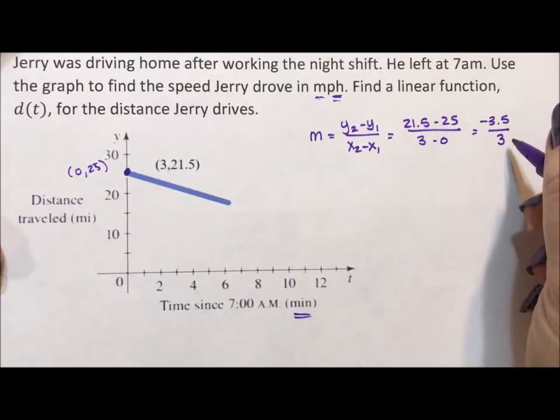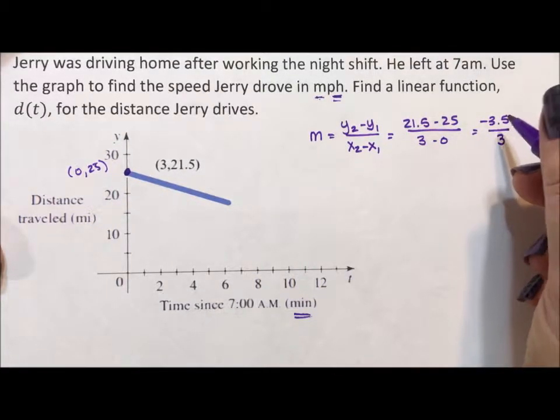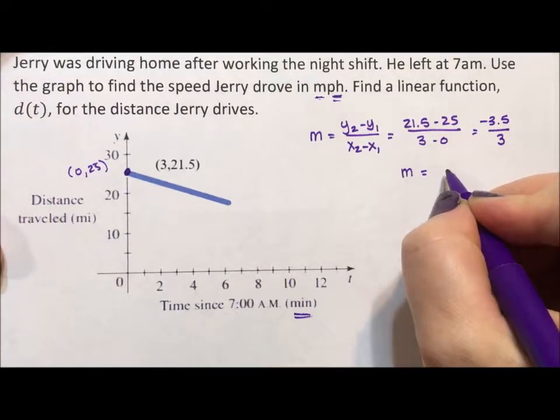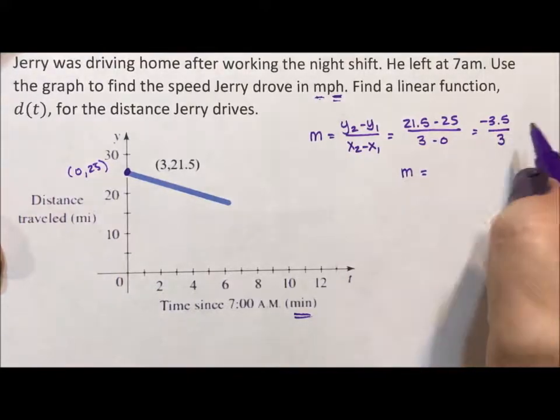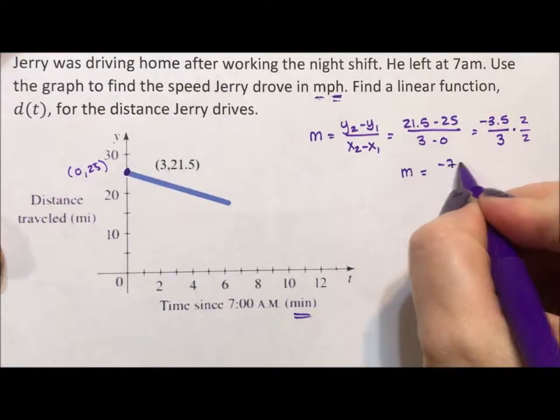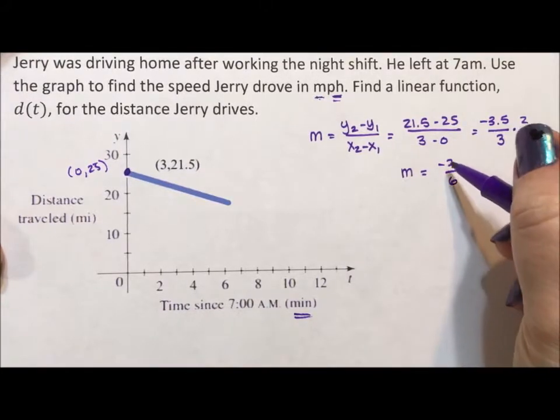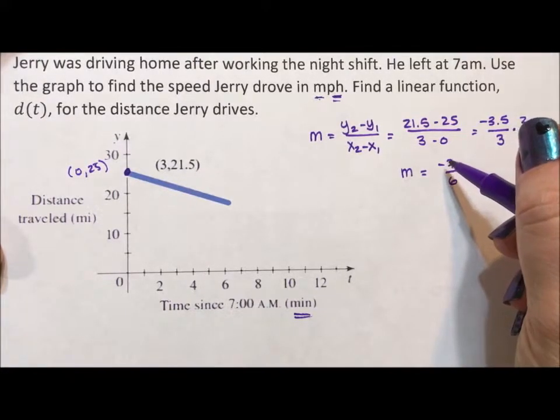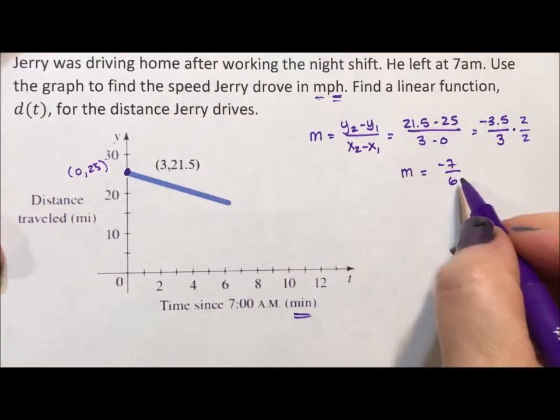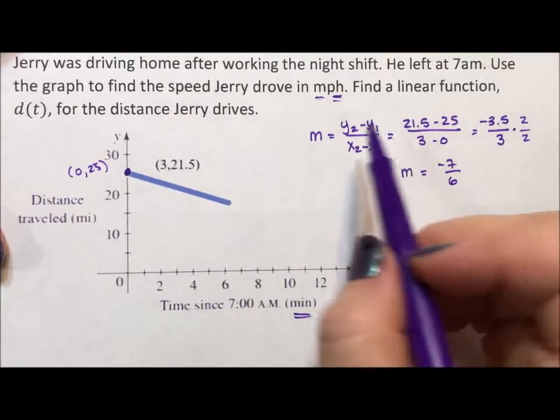And because we never leave a decimal in a fraction, we're going to say m is equal to, I don't want a repeating decimal. I'm going to cheat. I'm going to go up negative 7 sixths. Negative just means that the distance between work and home is going down because we're getting closer to home as we go. And the slope is negative 7 sixths.